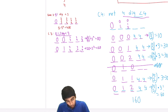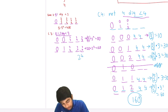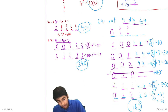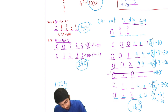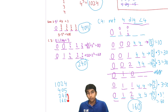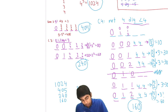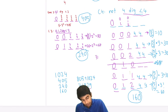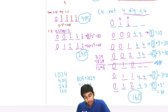Adding all failing cases: 1024 + 405 + 240 + 160 = 1829. The number of valid strings is 3125 − 1829 = 1296, which corresponds to answer choice E.